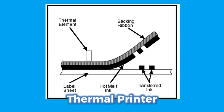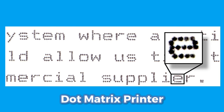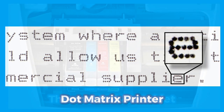Now let us look at some printer technology. Starting with the Thermal Printer — it was a type of printer which works by striking heated pins to heat-sensitive paper in order to print. We also have the Dot Matrix Printer, which uses a print head that moves back and forth on the page and prints by impact, striking an ink-coated cloth ribbon against the paper, much like a typewriter.